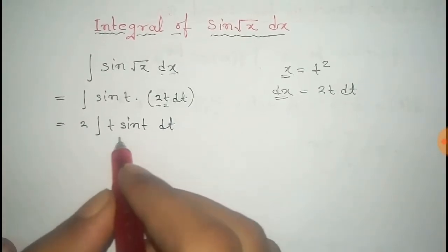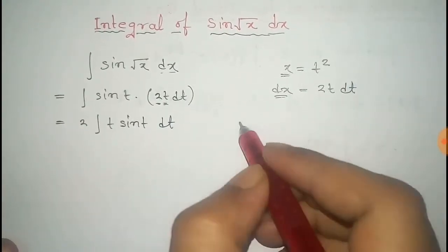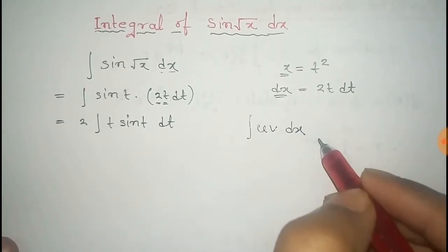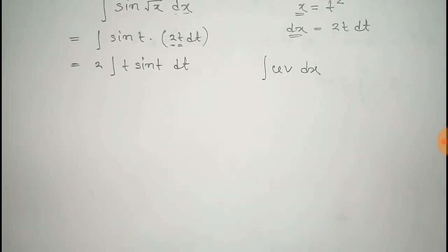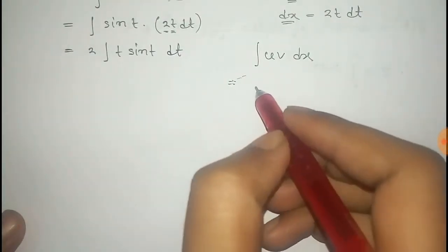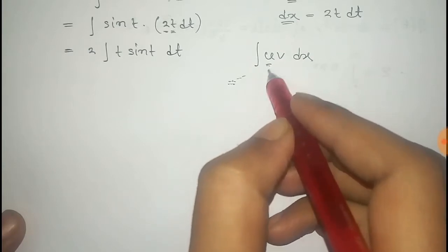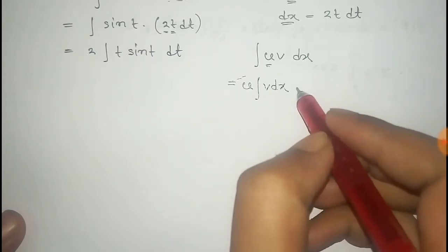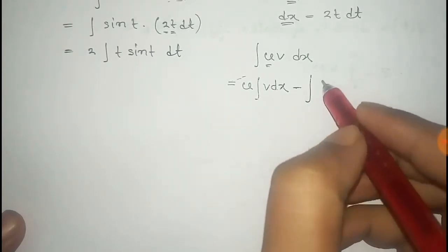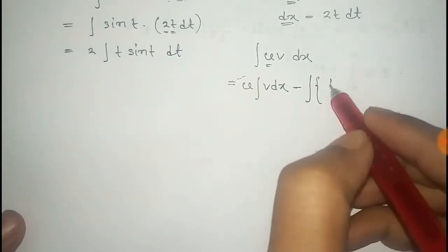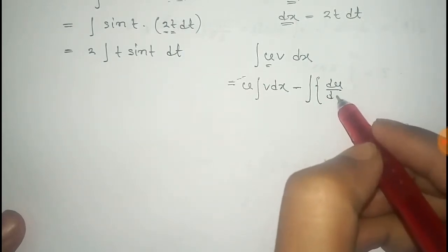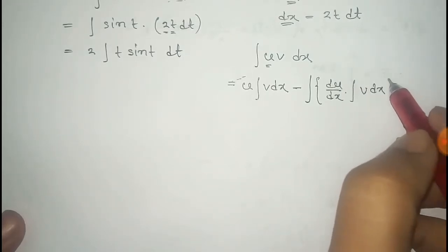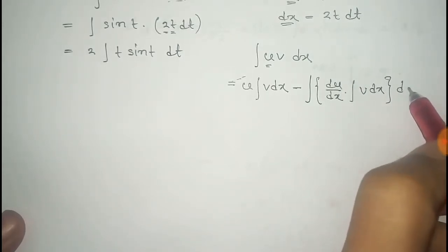Now we can easily integrate this using the formula for integration by parts, that is ∫u·v dx. Here u is the first term and v is the second term. The formula is given by: u into integral of v, minus the total integral of the derivative of u into the integral of v, all with respect to dx.